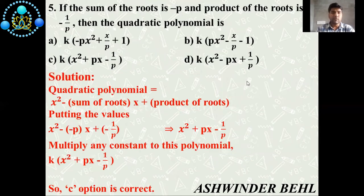Now last question is there. If the sum of the roots is -p and product of the roots is -1/p, then the quadratic polynomial is. Four options are given. First one: k(-px² + x/p + 1). B option: k(px² - x/p - 1). C option: k(x² - px + 1/p). D option: k(x² + px - 1/p).